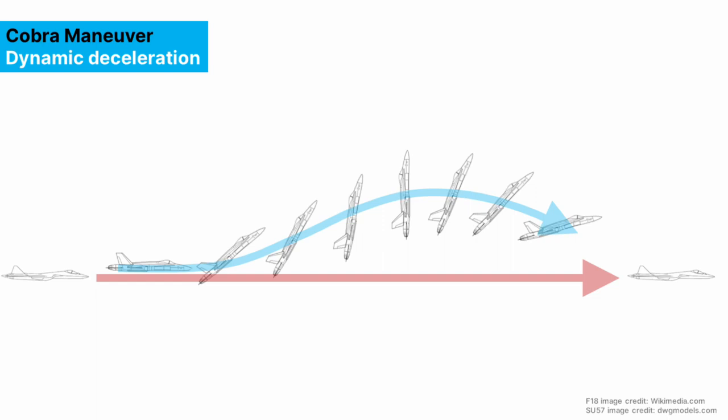the airplane will go into stall and act like an air brake, slowing it down. Now as the enemy airplane passes underneath you, you can pull the nose back down, resume level flight but only now in second position.